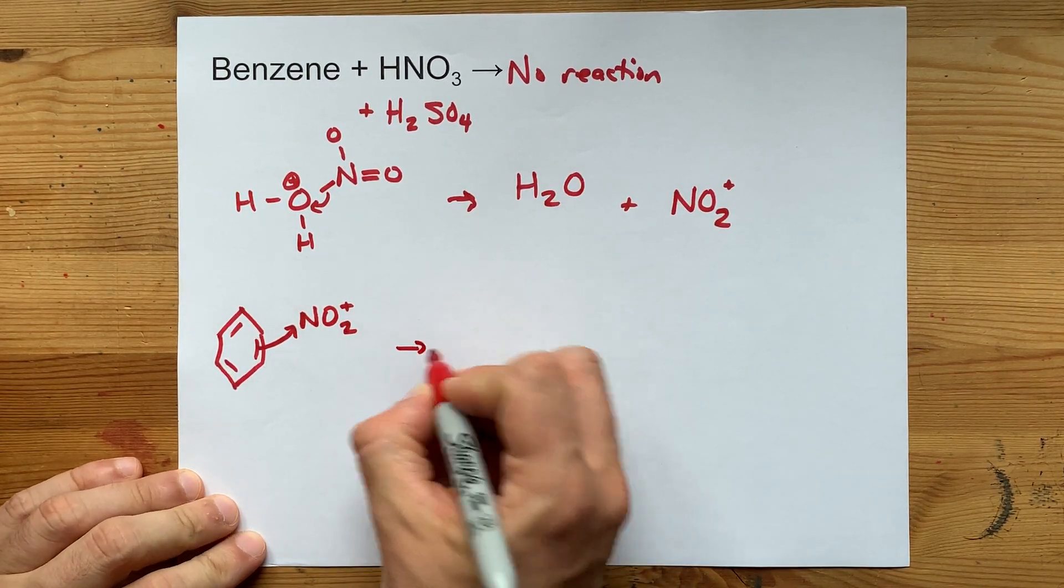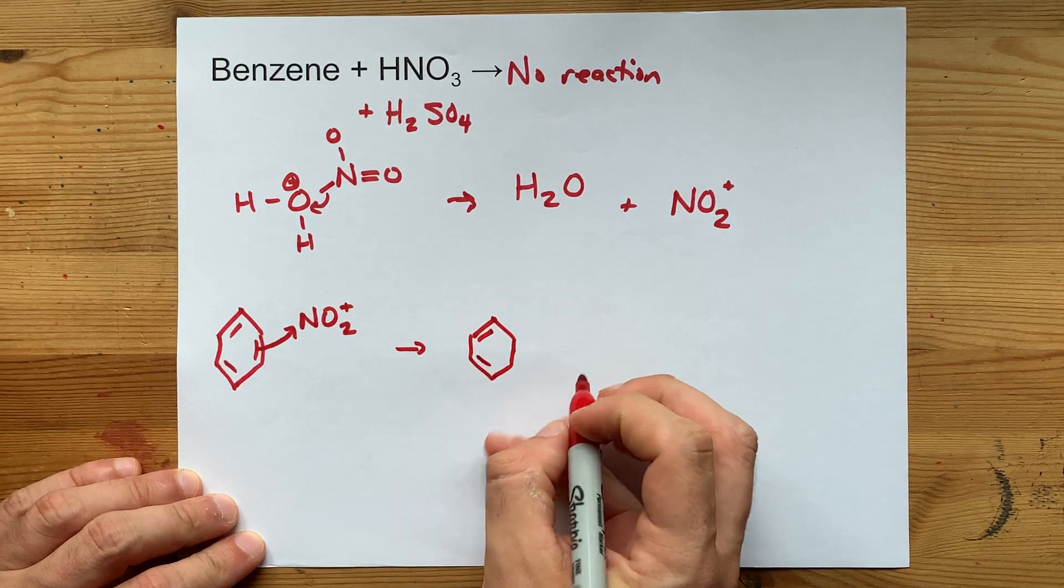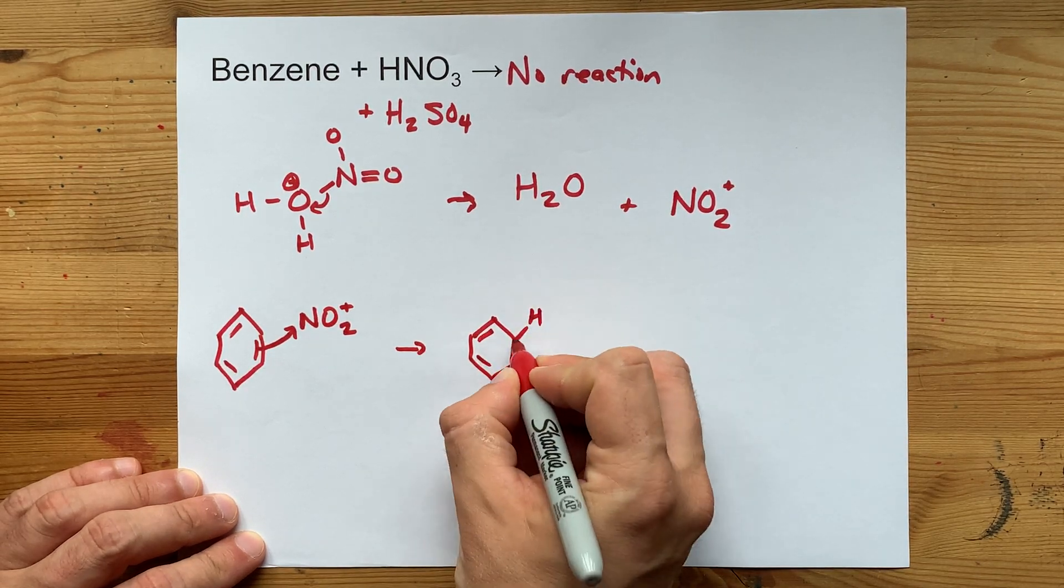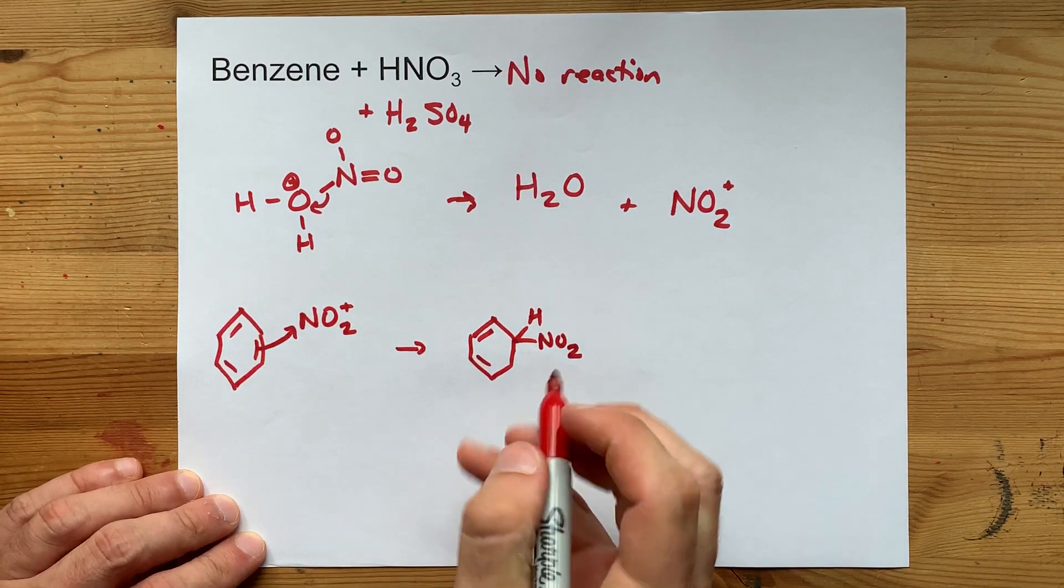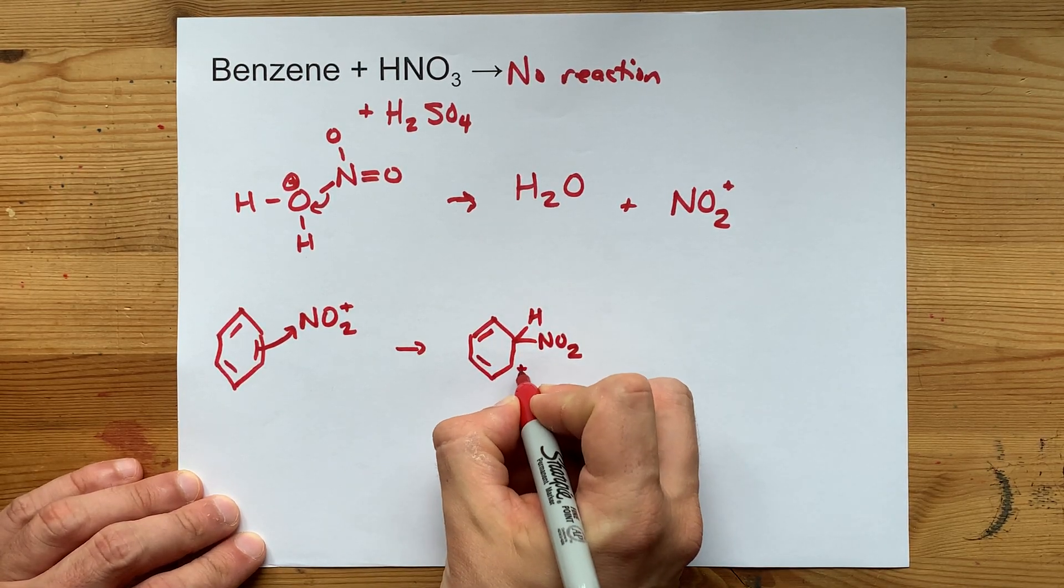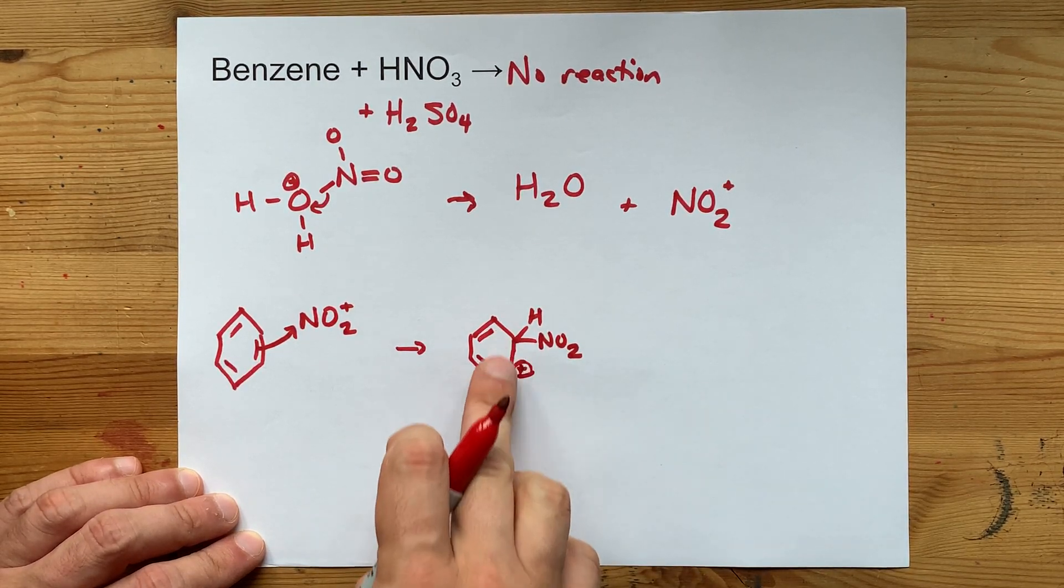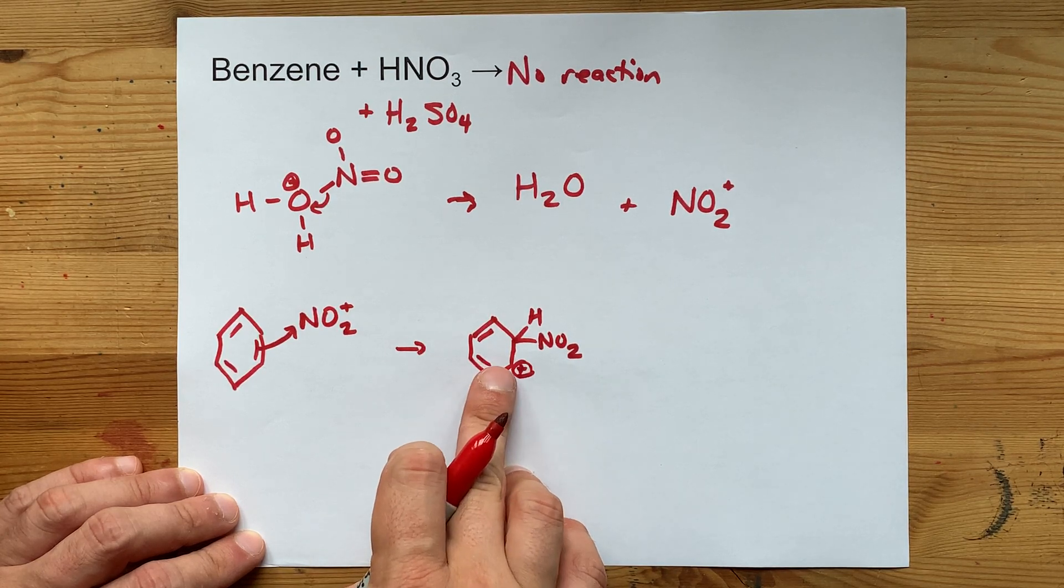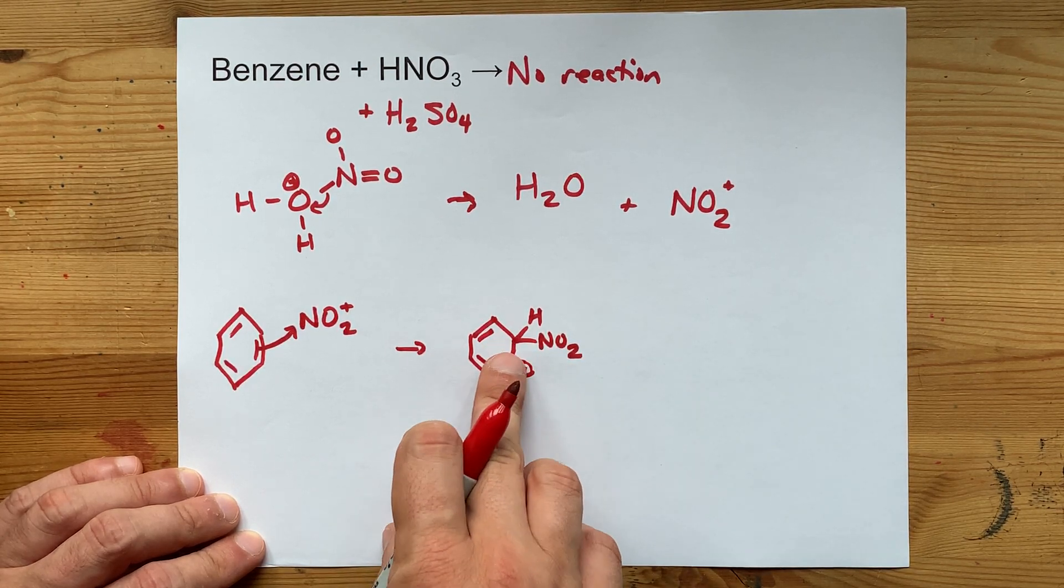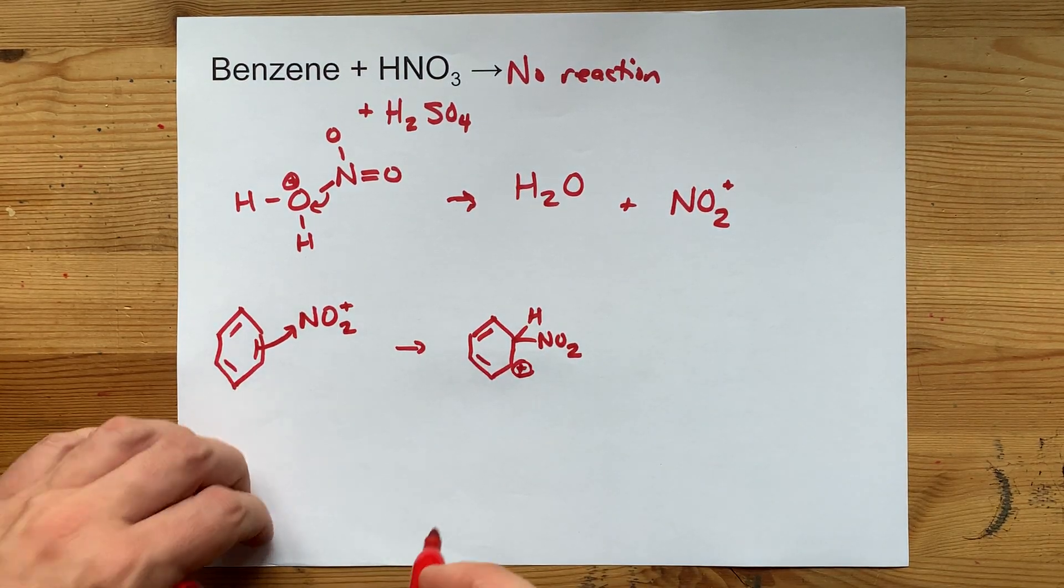You'll end up with that same benzene ring with two double bonds intact, an H and an NO2 attached to one of the carbons, and a formal charge of plus one on the other carbon. After all, we broke the double bond that was connecting those two carbons, and now this carbon only has three bonds, two to carbons in the ring and one to a hydrogen.